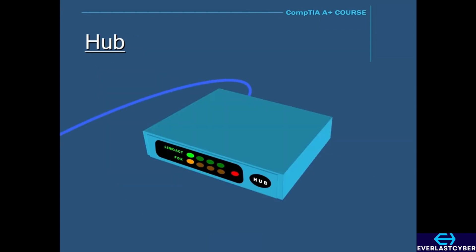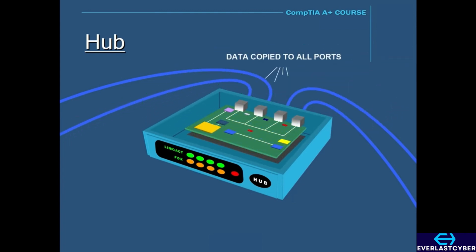A hub is a device that has multiple ports that accept Ethernet connections from network devices. A hub is considered not to be intelligent because it does not filter any data or have any intelligence as to where data is supposed to be sent. When a data packet arrives at one of the ports, it is copied to all other ports, so all the devices on that hub see that data packet.